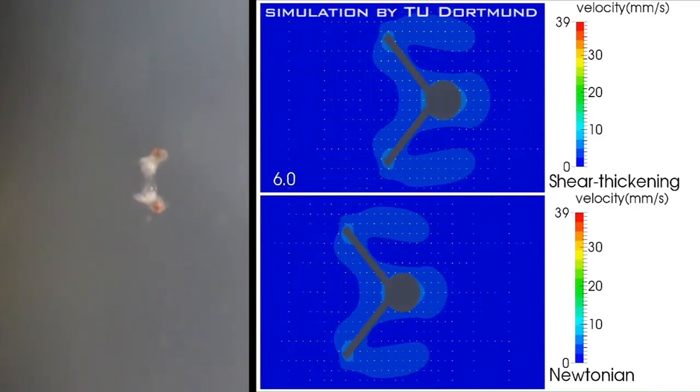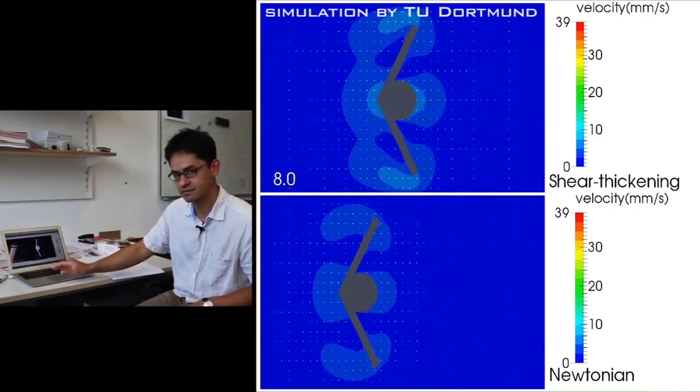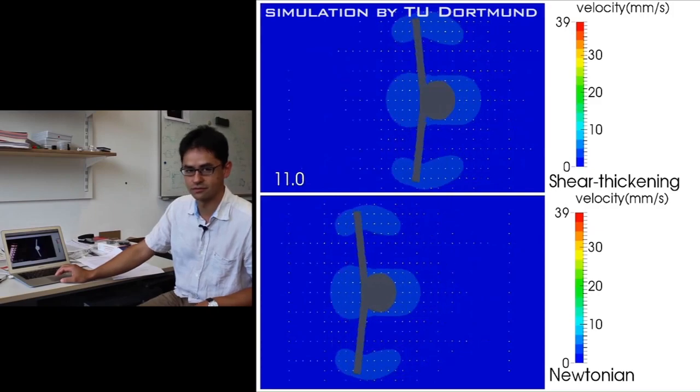Whereas the viscosity in front of the head of the scallop is relatively low so we have a net forward propulsion.